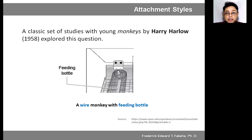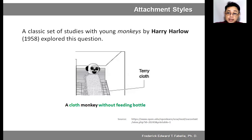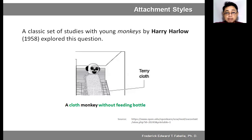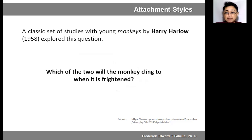What he did was create two artificial monkeys. One had a feeding bottle and was made of wire mesh — we can call this the wire monkey. The other had terry cloth around it but did not have a feeding bottle. The question was: if there is a baby monkey, to which artificial monkey will it cling when it is afraid?